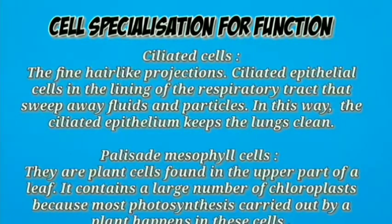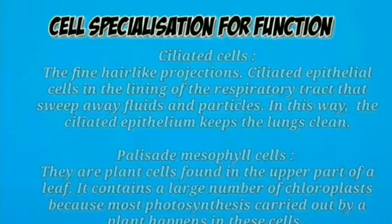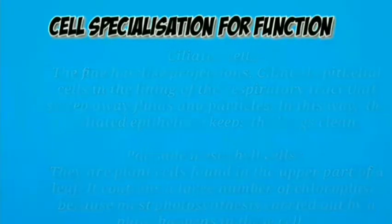Palisade mesophyll cells: Palisade cells are plant cells located on the leaf. They contain a large number of chloroplasts. The chloroplasts in these cells absorb a large portion of light used in photosynthesis.